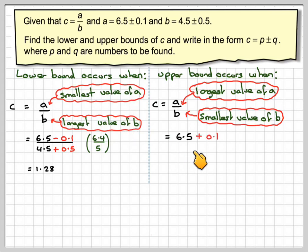So that's going to give me 6.5 plus 0.1 and then 4.5 minus 0.5, which gives me 6.6 divided by 4. You want large a and small b when you want the upper bound, so that gives me 1.65.